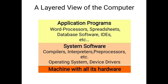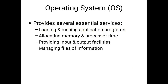This picture shows a layered view of the computer. Application programs include word processors, spreadsheets, and database software. Integrated development environments are part of system software, along with compilers, interpreters, preprocessors, and so on. The operating system and device drivers are also system software, and at the bottom is the machine with all its physical hardware components. The operating system provides an interface between computer hardware and end users, handles loading and running application programs, allocates memory and processor time, and provides input and output facilities. It also manages files.